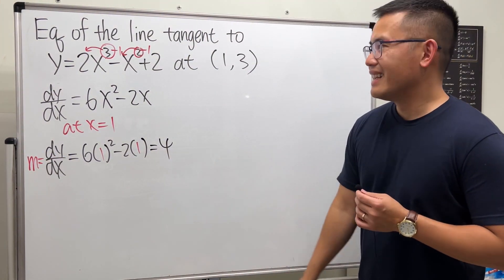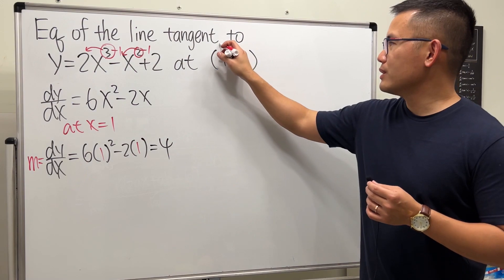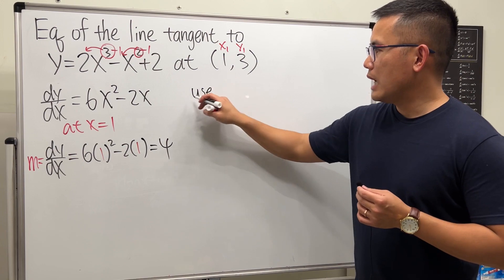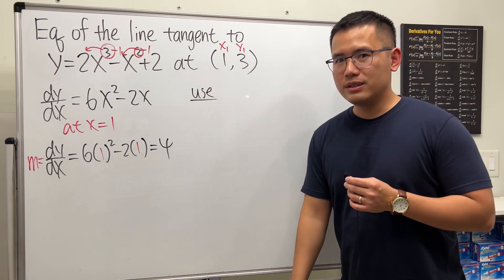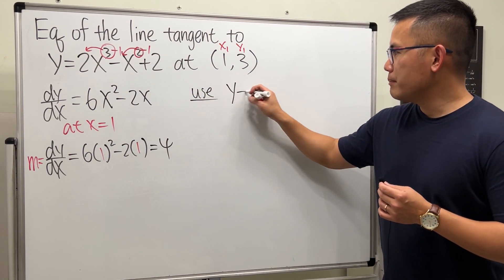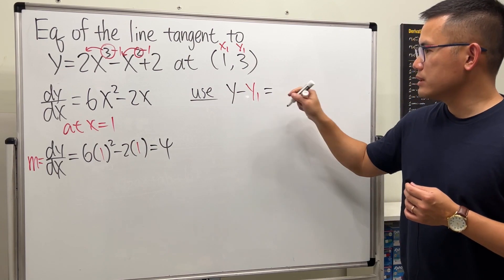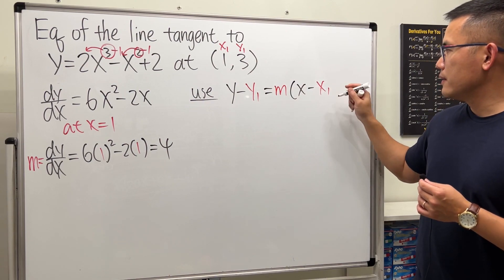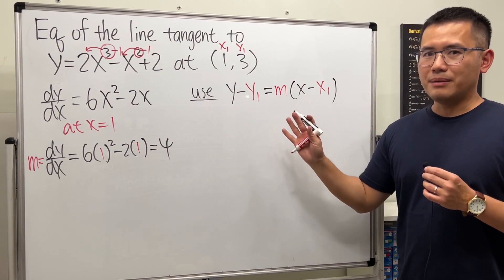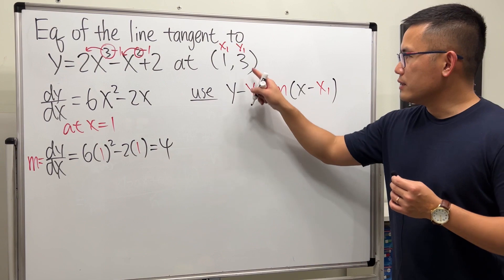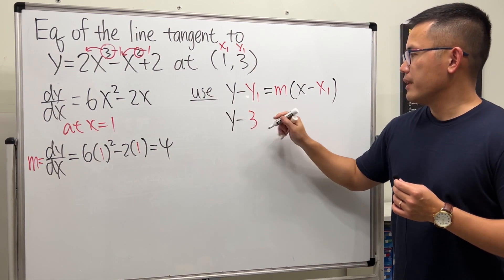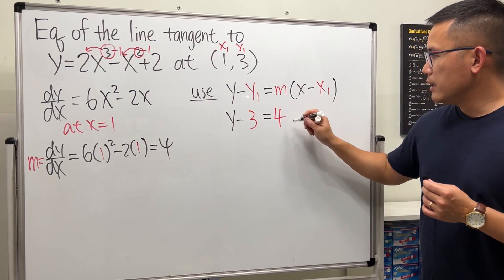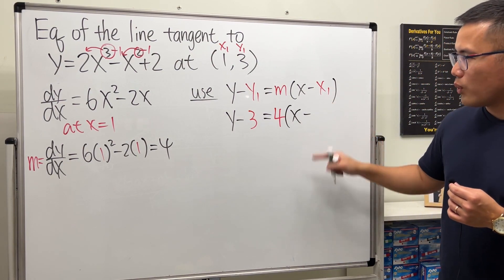This point we know is (x₁, y₁). We can use the point-slope form: y - y₁ = m(x - x₁). Just plug in the numbers. y₁ is 3, so this is y - 3 equals m is 4 times x - x₁ which is 1.